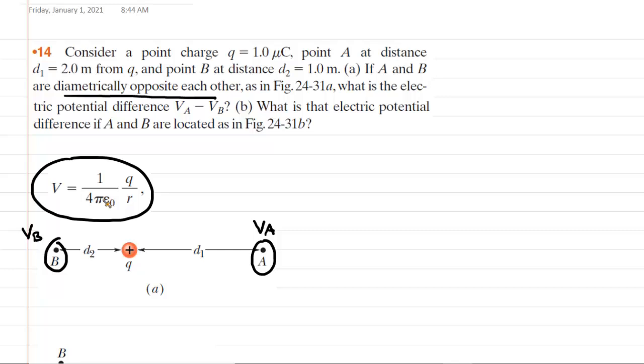For example, if we were going to use that equation to determine the electric potential at point A, we would say 1 over 4 pi epsilon naught, and all of that is a constant, as we will see, multiplied by the charge Q, and then divided by the distance from the point charge to location A. We can see that that distance is indicated by D1, so we can actually substitute D1 in for that distance.